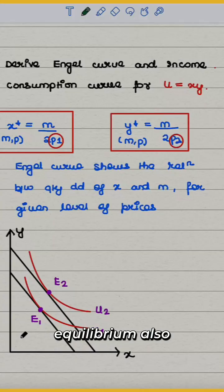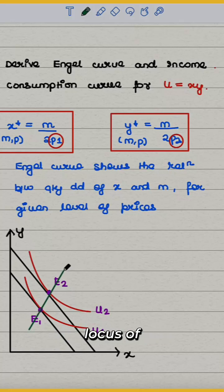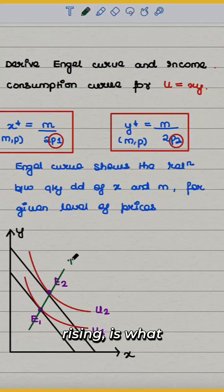As income increases, equilibrium also rises from e1 to e2, and the locus of equilibrium as income is rising is what the income consumption curve is.